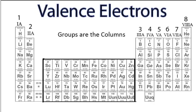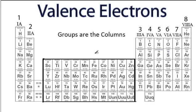So why don't we practice just a bit? I'll choose an element, pause for a second, and you figure out how many valence electrons. How about phosphorus? Group 5, or 5A, 5 valence electrons. How about magnesium? Group 2, or 2A, 2 valence electrons.